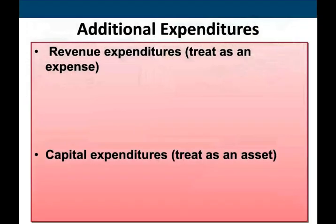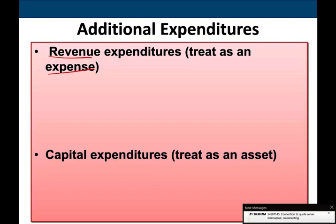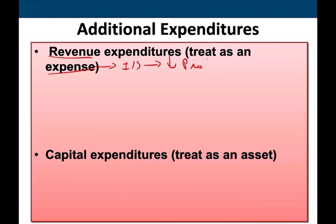When do we treat it as a revenue expenditure, which we treat as an expense? If it's an expense, it goes on the income statement and reduces your profit or income. A capital expenditure like the lift is treated as an asset. Eventually it goes to the income statement, but slowly through depreciation.